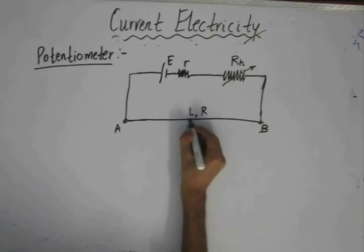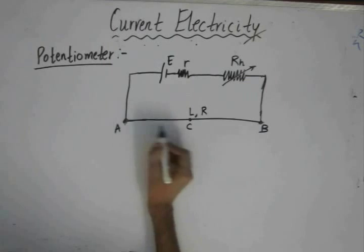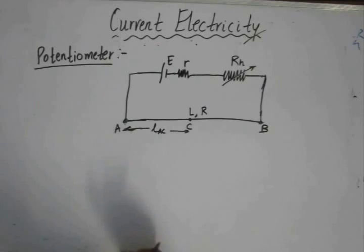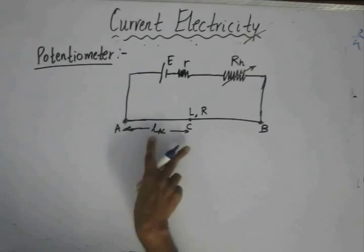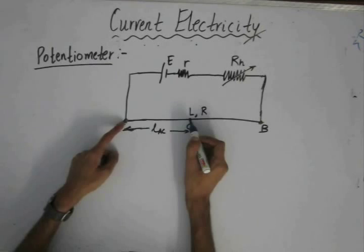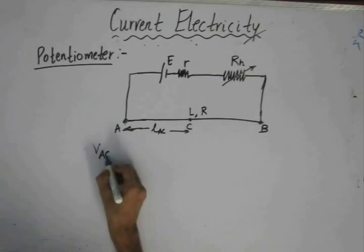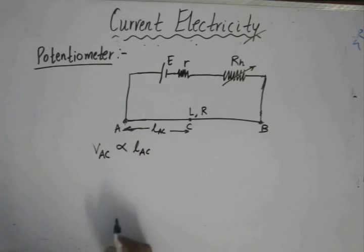The principle used in the potentiometer is: if we want to find the potential difference between any two points along the potentiometer wire — suppose we need to find the potential difference between points A and C, where the corresponding length is LAC — then as per the principle of potentiometer, the potential difference between two points across a potentiometer is directly proportional to its corresponding length. That means the potential difference between points A and C is directly proportional to the length LAC.